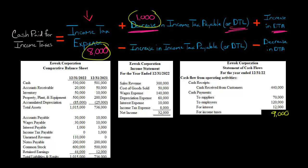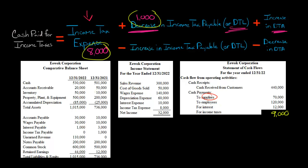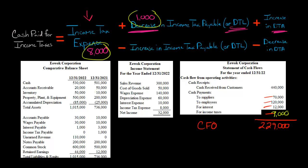That gives us cash paid for income taxes of $9,000. We now have enough information to finish out our operating section for the subtotal of net cash from operating activities. We have cash received from customers, cash payments to suppliers from cost of goods sold, wages converted to cash paid to employees, cash paid for interest, and now cash paid for income taxes of $9,000. Taking all cash receipts of $440,000 and subtracting $70,000, $120,000, $12,000, and $9,000 gives us $229,000 in cash from operating activities.